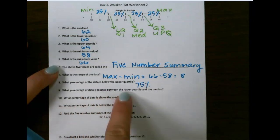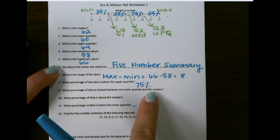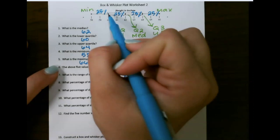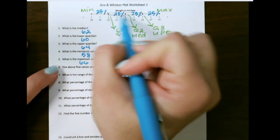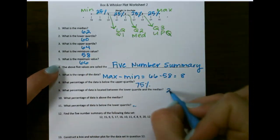What percentage of data is located between the lower quartile and the median? That would be this number and this number, so that's only one quartile, which is 25%.